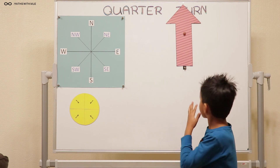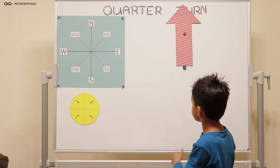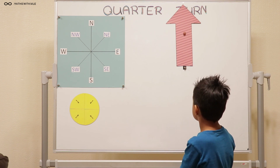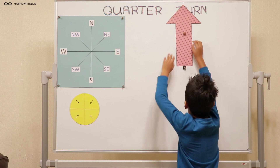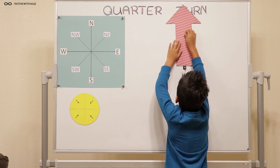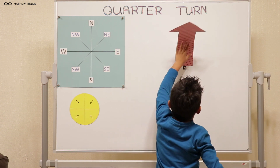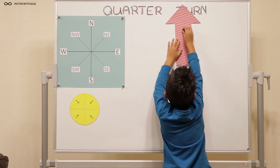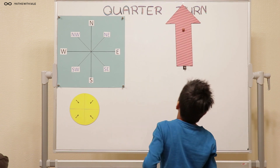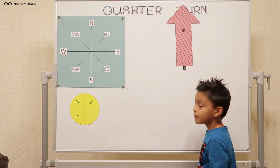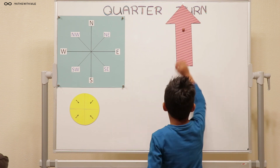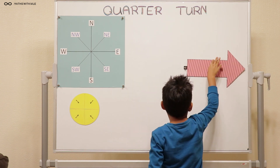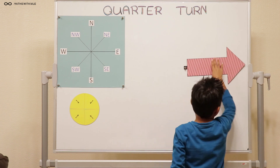Now, do you remember which direction is clockwise? If you face the board, can you use your hands to show us which direction is clockwise? It's this way. Very good. So can you make that arrow turn a quarter turn clockwise? Very good.